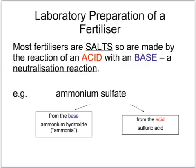An example of one of these fertilisers, which is a salt, is ammonium sulphate. In order to make ammonium sulphate you'd need the base ammonia, but you'd also need an acid — to make the sulphate you'd need to use sulphuric acid.